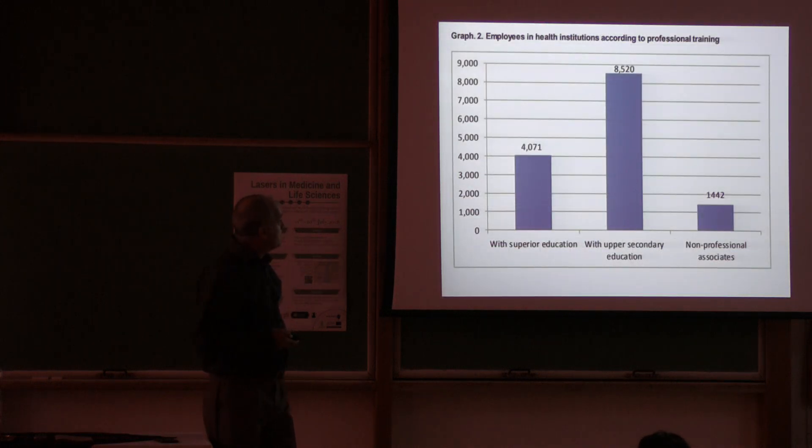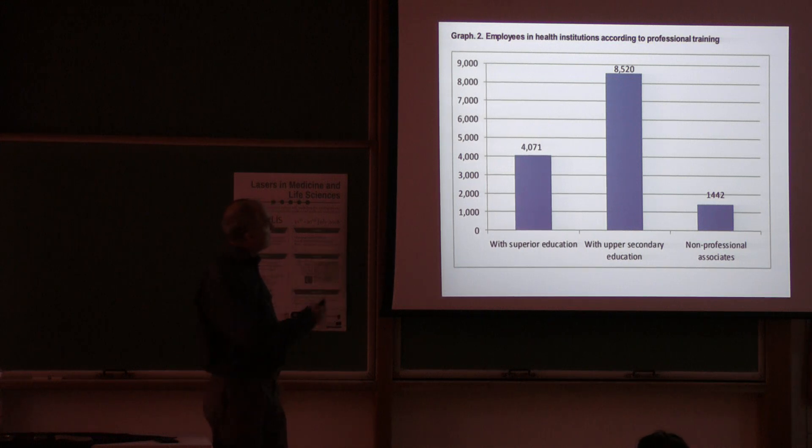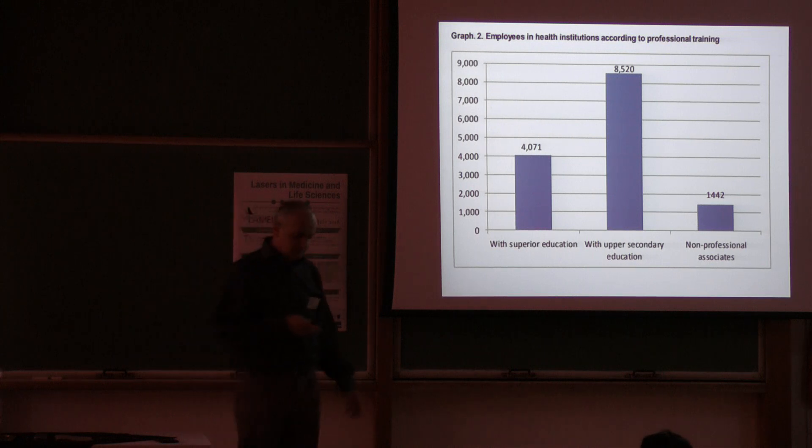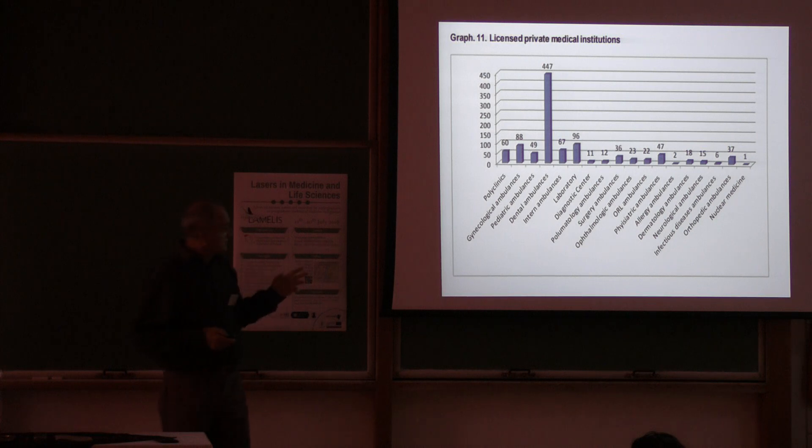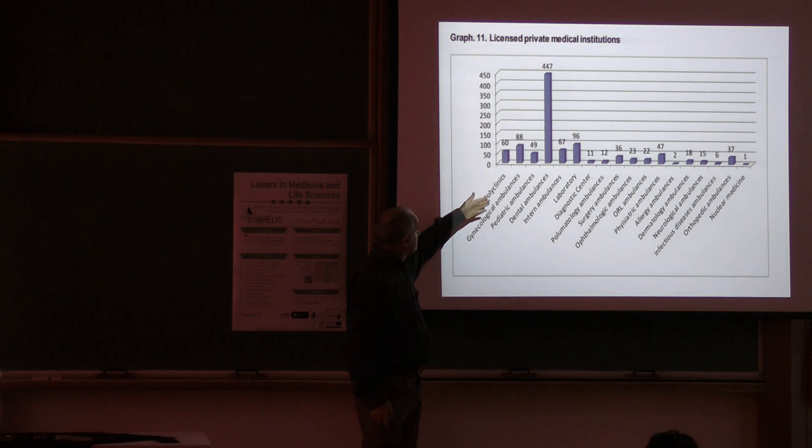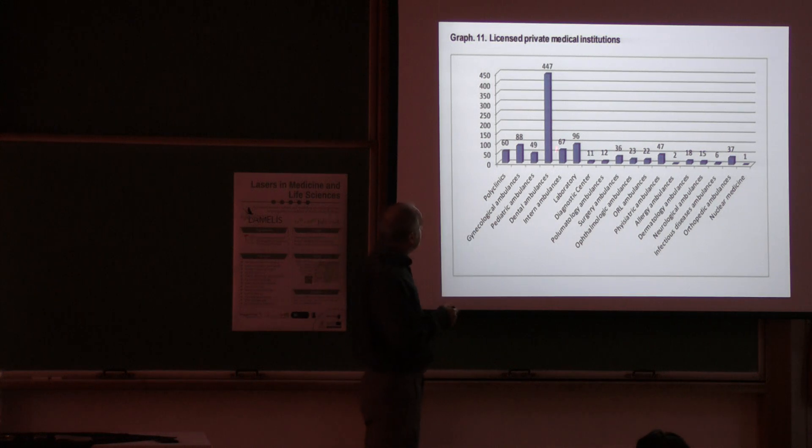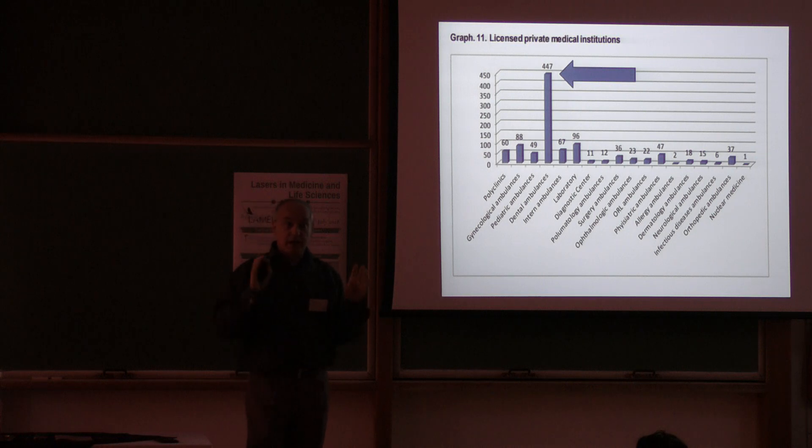This chart shows that we have about 4,000 employees in healthcare institutions with higher education. With upper secondary we have about twice as much, while small professional associates like support staff, drivers are about 1,500. Now, these are licensed private clinics in Kosovo. We have different polyclinics about 60 of them, gynecological about 88 - I'm talking about entire Kosovo - pediatric 49 and so on. But dental ambulances, dental clinics, we have about as much as all other healthcare institutions in Kosovo, which brings the reason why Langerwitz has decided to invite lasers in dentistry speakers. In Kosovo we really have lots of dental clinics.